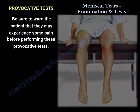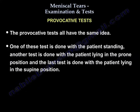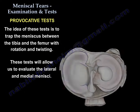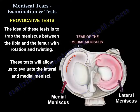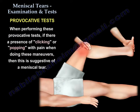You may warn the patient that they may experience some pain. The provocative tests all have the same idea — one is done standing, one is done prone, and the other one supine. The whole idea is to trap the meniscus between the tibia and the femur with rotation and twisting, which allows us to evaluate the lateral meniscus and the medial meniscus. Basically, if you get a click or a pop with pain when you do this maneuver, that is suggestive of a meniscal tear.